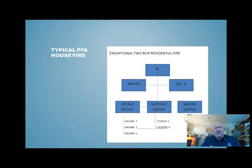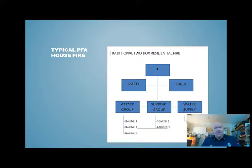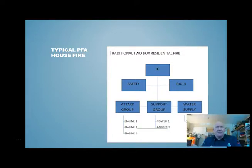In a typical house fire at PFA we run what we call a two-box residential fire, and the two boxes are really the groups. So you have an IC, under them a safety officer and a rapid intervention crew, and then the attack group working with the support group. Water supply on a residential in the city is going to be a pretty short-lived assignment — hence the two-box fire. On a larger rural setting you can have a water supply group as well. This is essentially what our command structure looks like for most structure fires we run.